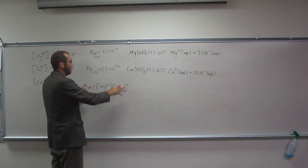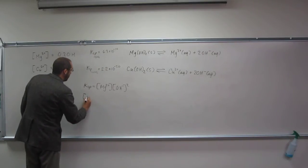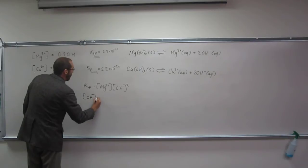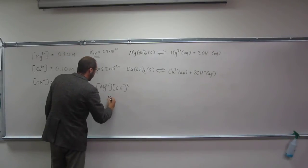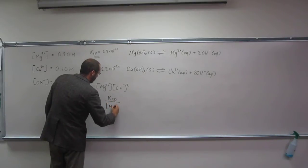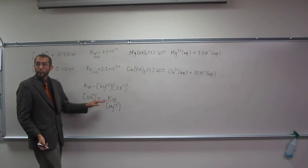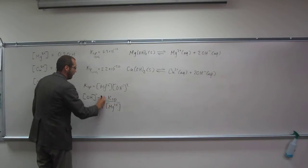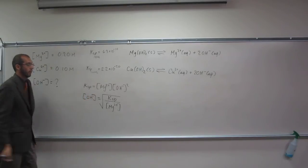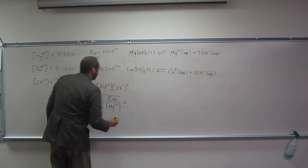Let's rearrange this equation to solve for OH-. So OH- equals the square root of Ksp divided by Mg2+ concentration. That should give us the hydroxide ion concentration. Let's just plug and chug.